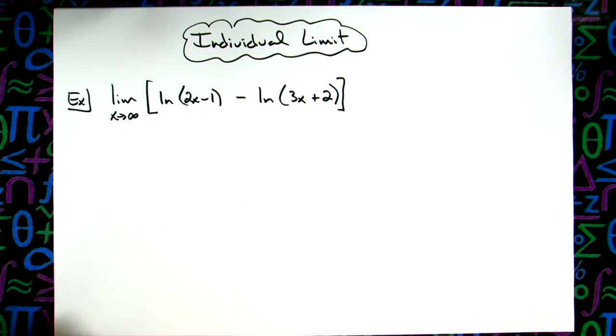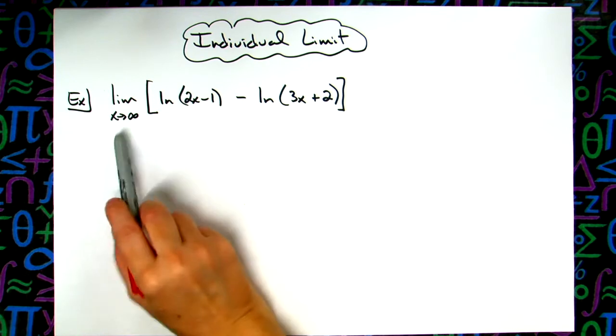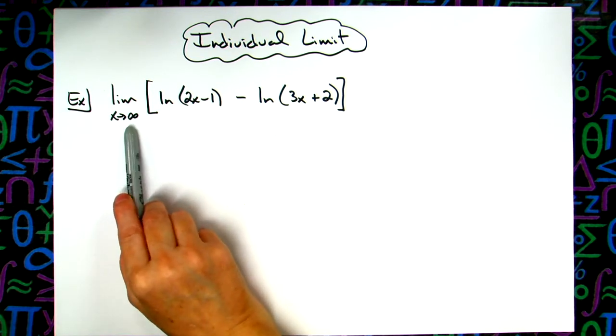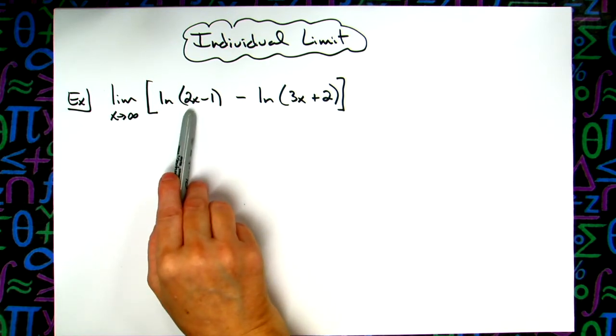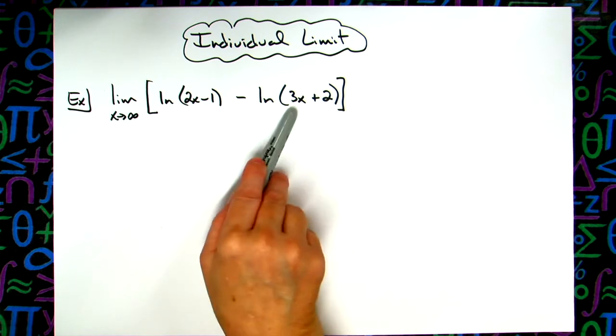In this video, I'm going to take a look at an individual limit. We're going to have the limit as x approaches infinity of the natural log of 2x minus 1 minus the natural log of 3x plus 2.